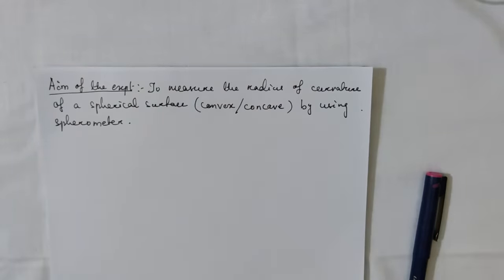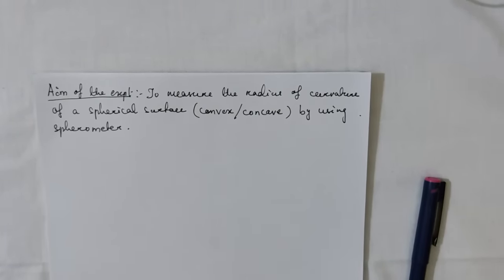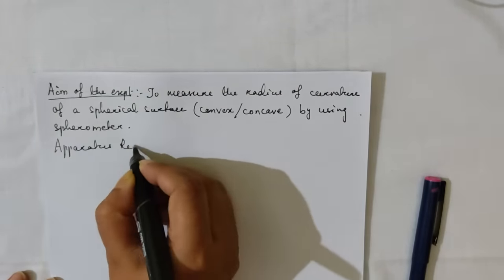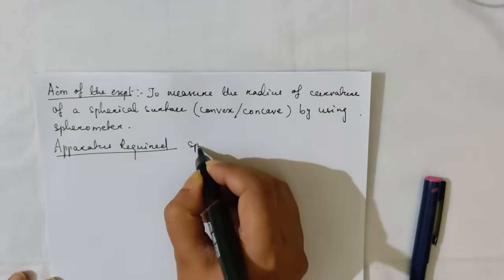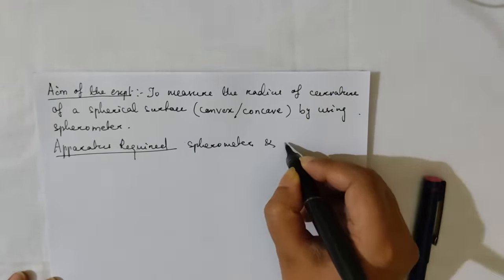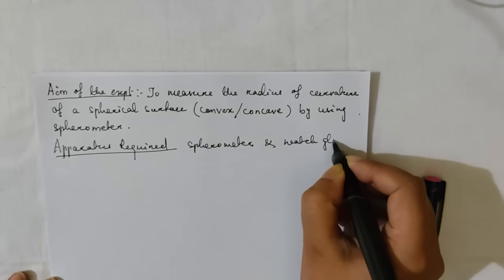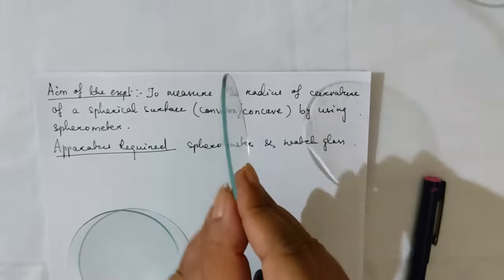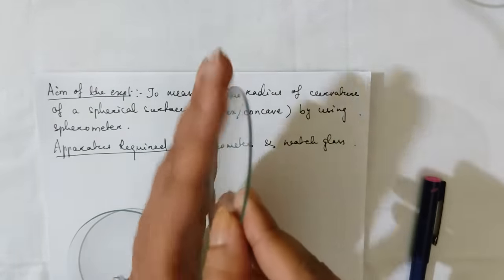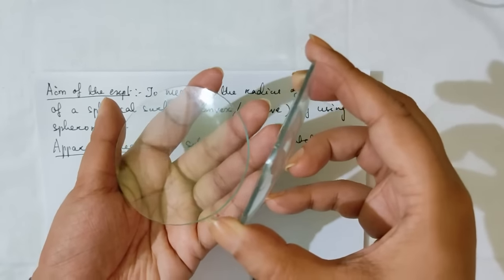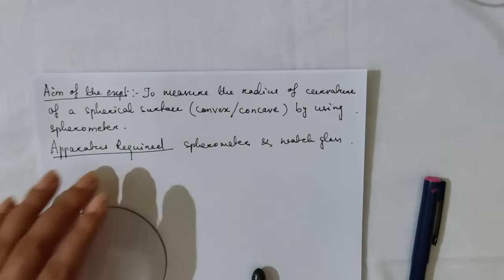The apparatus required is the spirometer and the watch glass. The watch glass has a spherical surface — one side is convex and the other side is concave. This is the watch glass I am taking, and this is the spirometer.